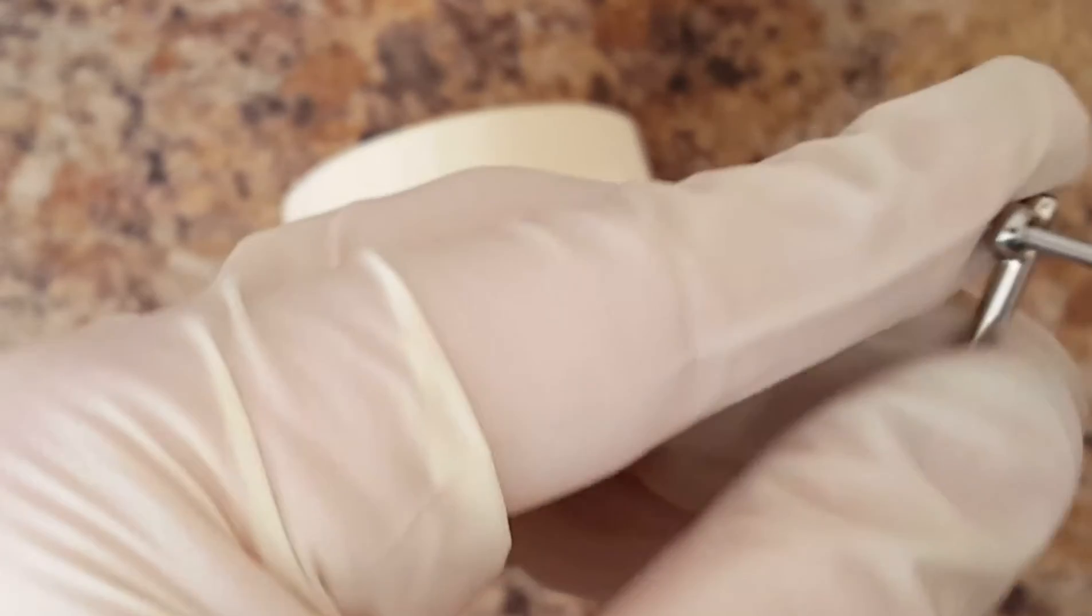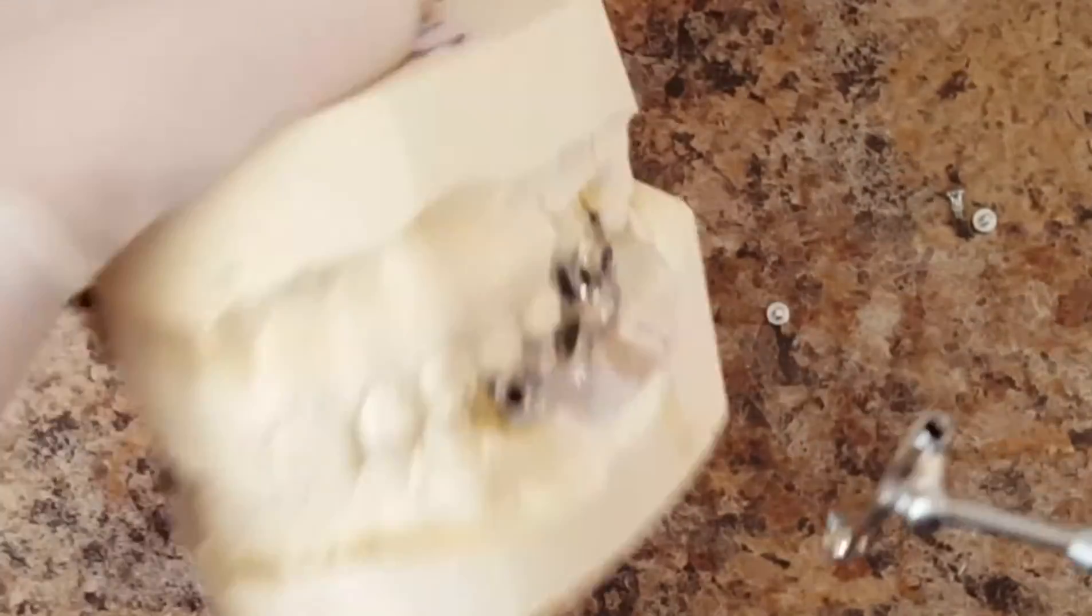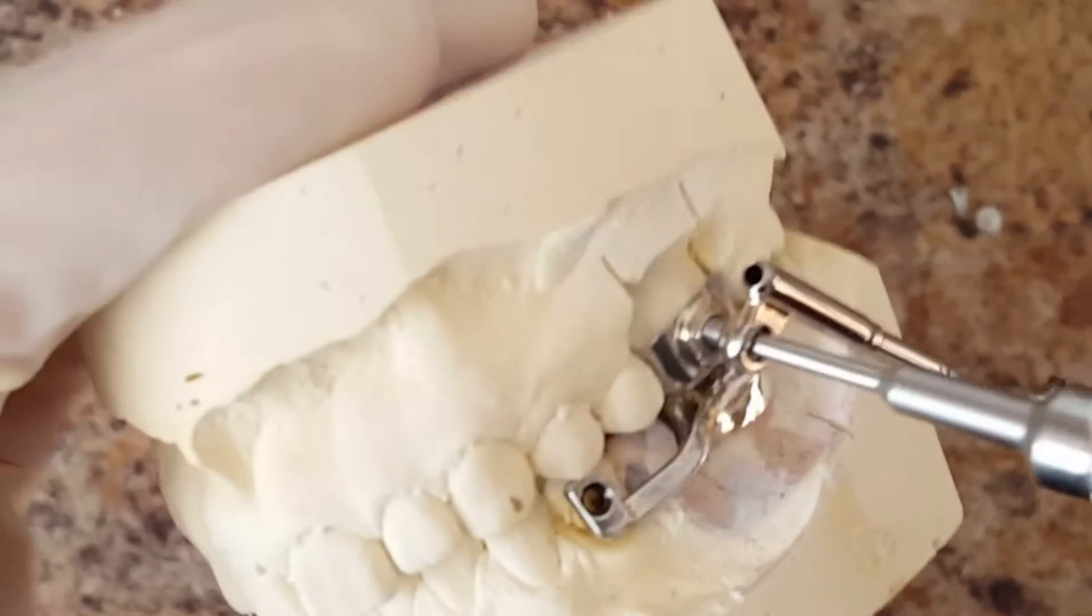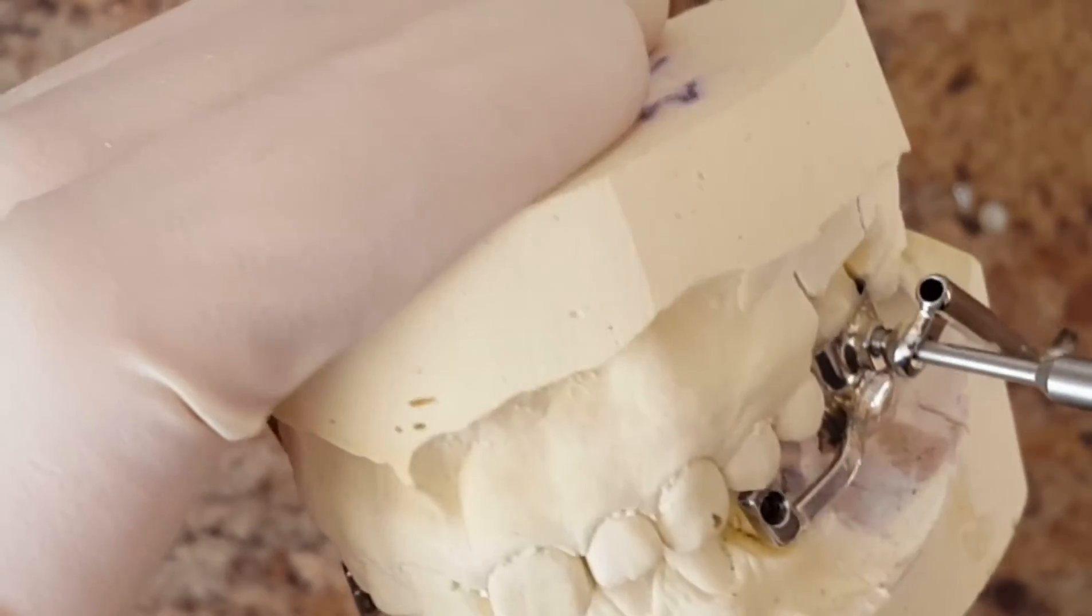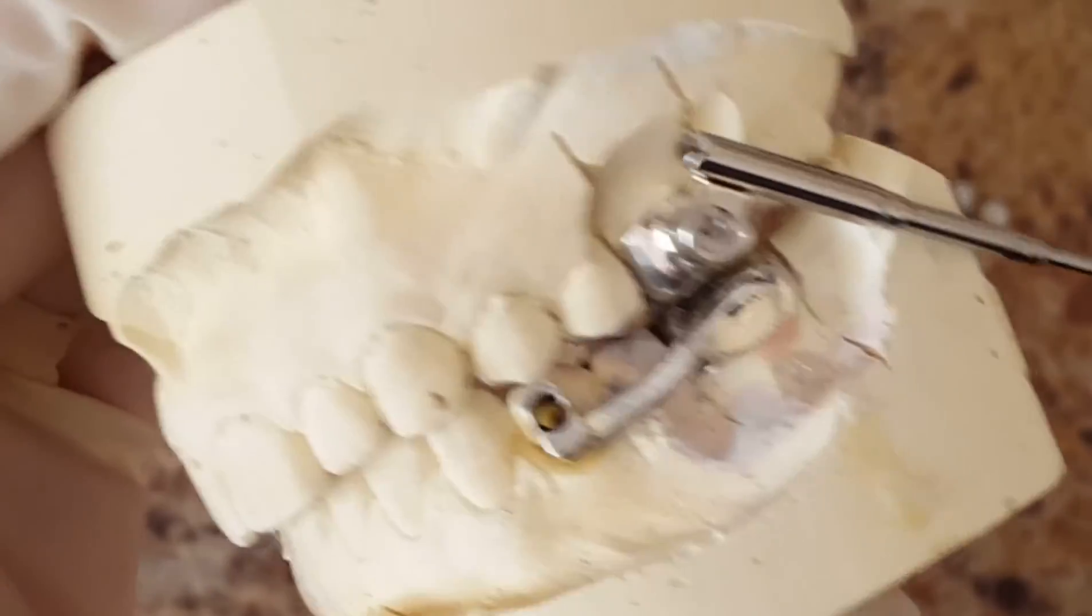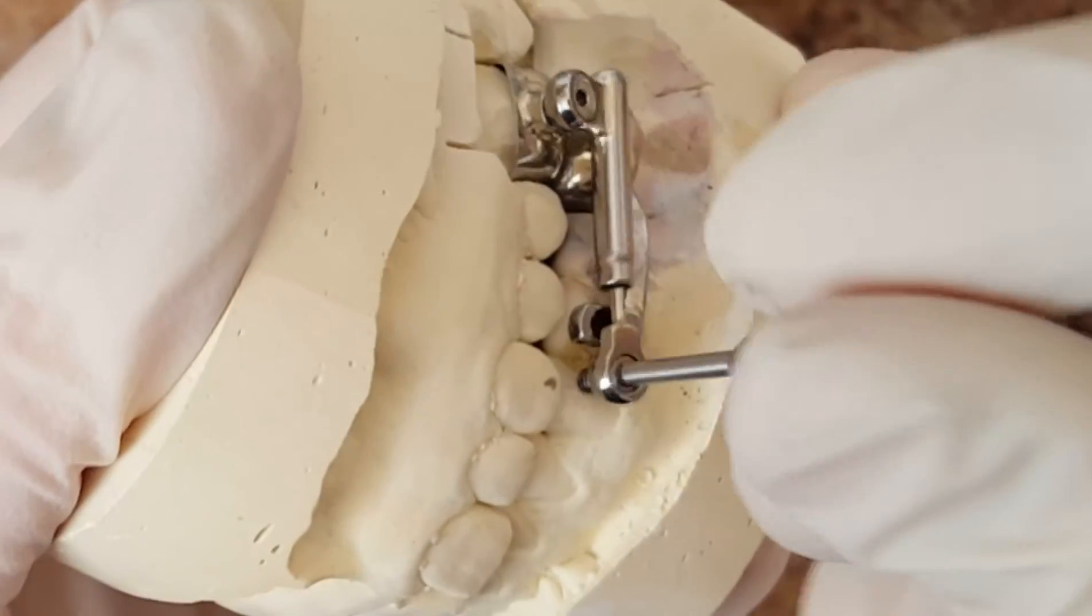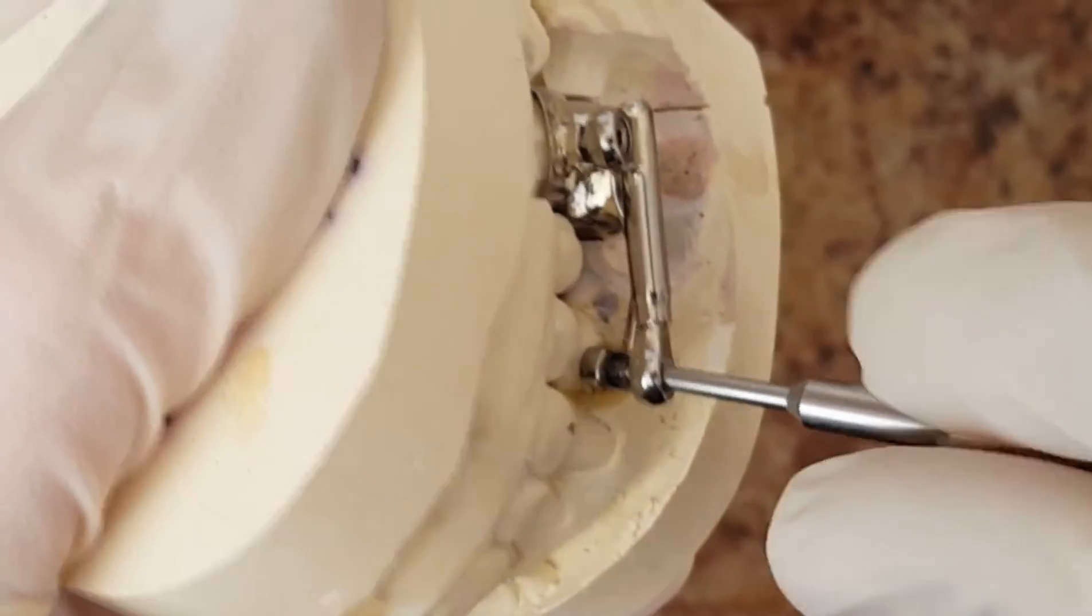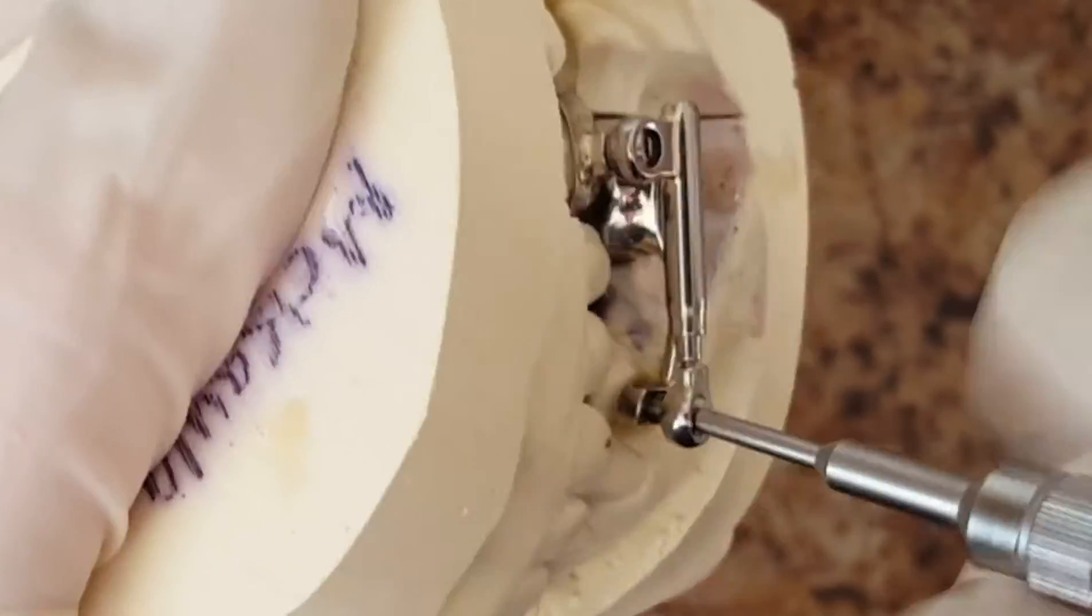This next assembly is the Hanks Telescoping Herbst. The hex head screw is actually incorporated into the arm. It's very easy to use. I like to use an Allen wrench that's a built-in screwdriver for this process. The Hanks also is very functional and has great lateral side-to-side movement.